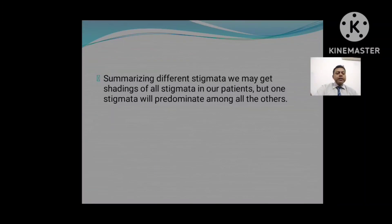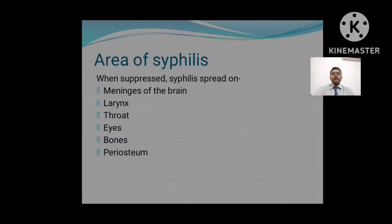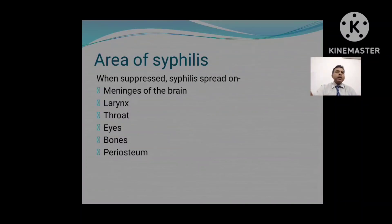The accentuation of Psora is functional, that of Syphilis is ulcerative taint, and that of Sycosis is infiltration and deposits. This is given in this chapter. Now, when we talk about the areas — in which part of the body the miasms of Psora, Syphilis, and Sycosis are affecting — we can identify distinct regions.